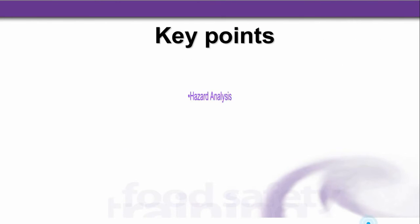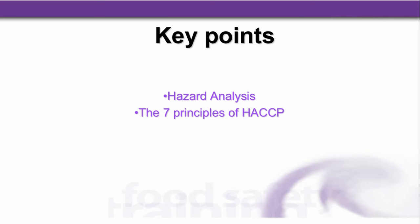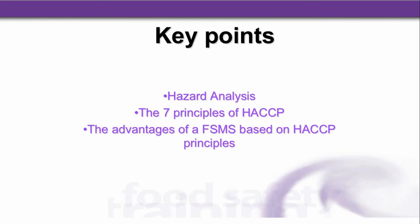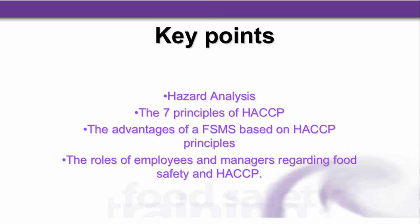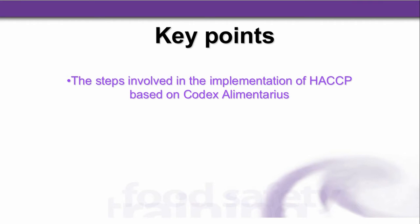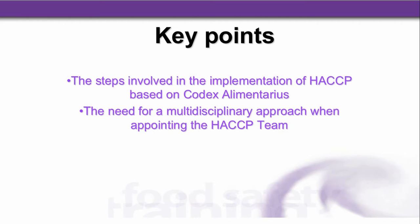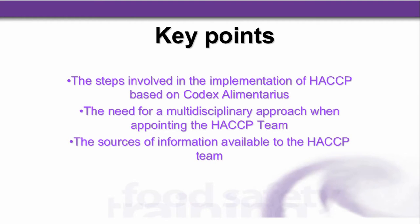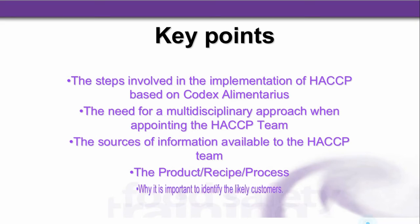The key points for module four covered hazard analysis, the seven principles of HACCP, the advantages of a food safety management system based on HACCP principles, and the roles of employees and managers regarding food safety and HACCP. That took us on to module five, preparing for implementation. Key points covered the steps involved in implementing HACCP based on Codex Alimentarius, the need for a multidisciplinary approach when appointing the HACCP team, sources of information available to the HACCP team, the product, recipe and process, and why it's important to identify the likely customers.